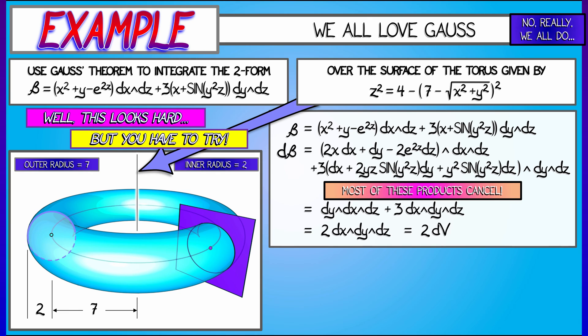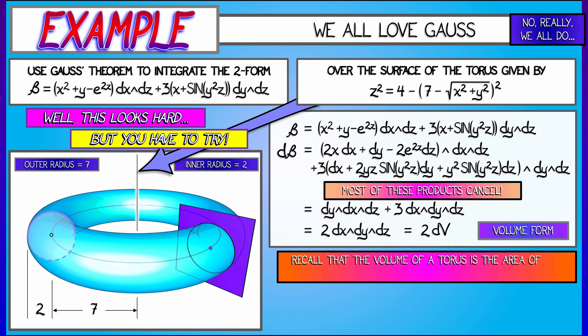That means, by Gauss's theorem, we just have to compute twice the volume of this solid. Now, recall that for an object of revolution about some axis, its volume can be computed as the product of the cross-sectional area with the distance that the centroid of that region travels. That's called Pappus's theorem, and that comes from single-variable calculus.